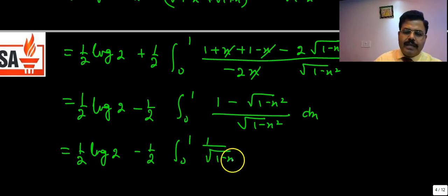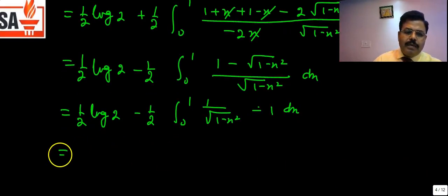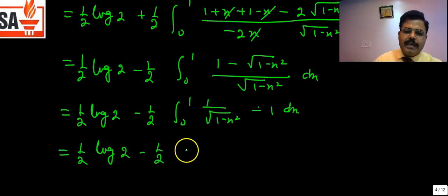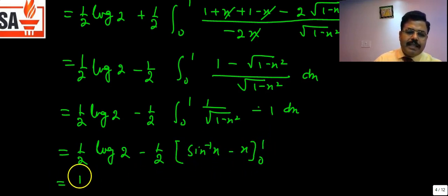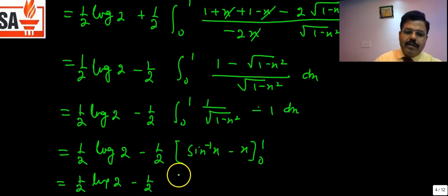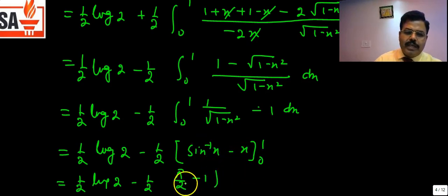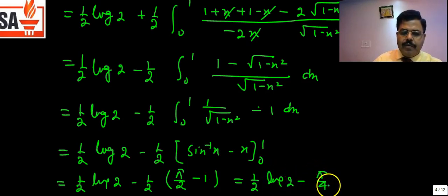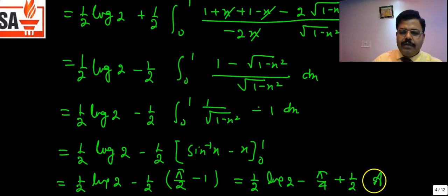The integral of 1/√(1−x²) is sin⁻¹x, and the integral of 1 is x, evaluated from 0 to 1. At x=1: sin⁻¹(1) = π/2 and x=1; at x=0 both are 0. So I = ½·log2 − ½·(π/2 − 1) = ½·log2 − π/4 + ½. That is the answer.